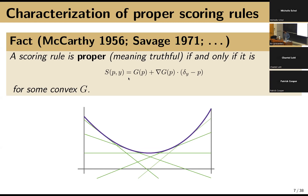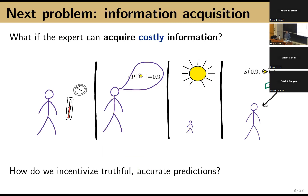Manisha and I were looking at a new variant where the expert can acquire information before they predict, and that information could help them predict better — but it might be costly. They might not want to bother acquiring that information unless they're going to get a much better score. So how do you design a reward function? What does it look like? What's the space of things you could do if the expert is going to be acquiring information and then making a better prediction?